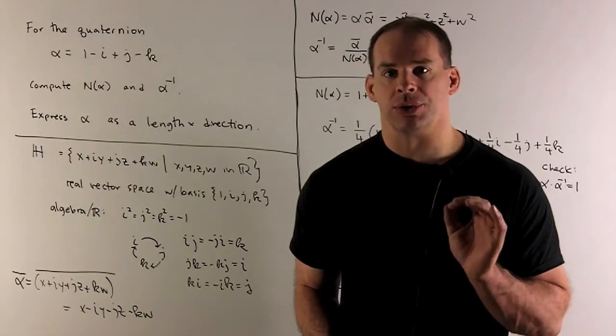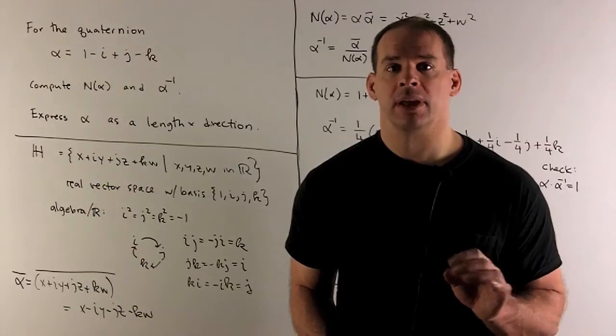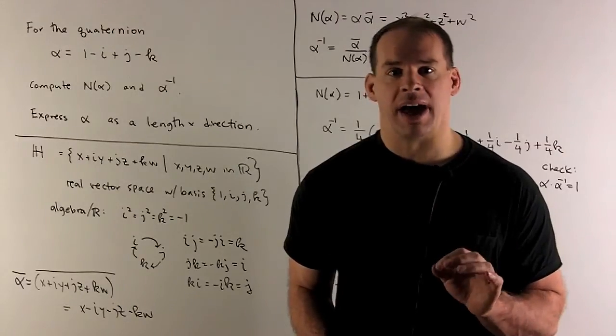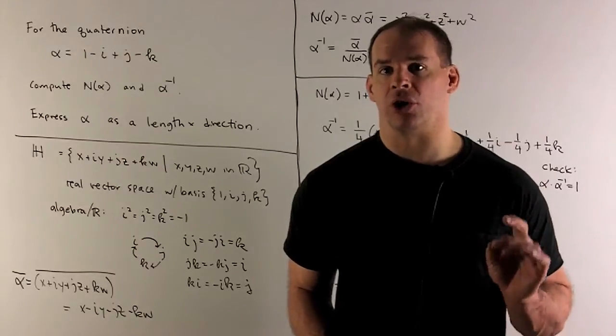For the quaternion alpha equal to 1 minus i plus j minus k, find the norm of alpha and find alpha inverse. Then express alpha as a product of a length and a direction.